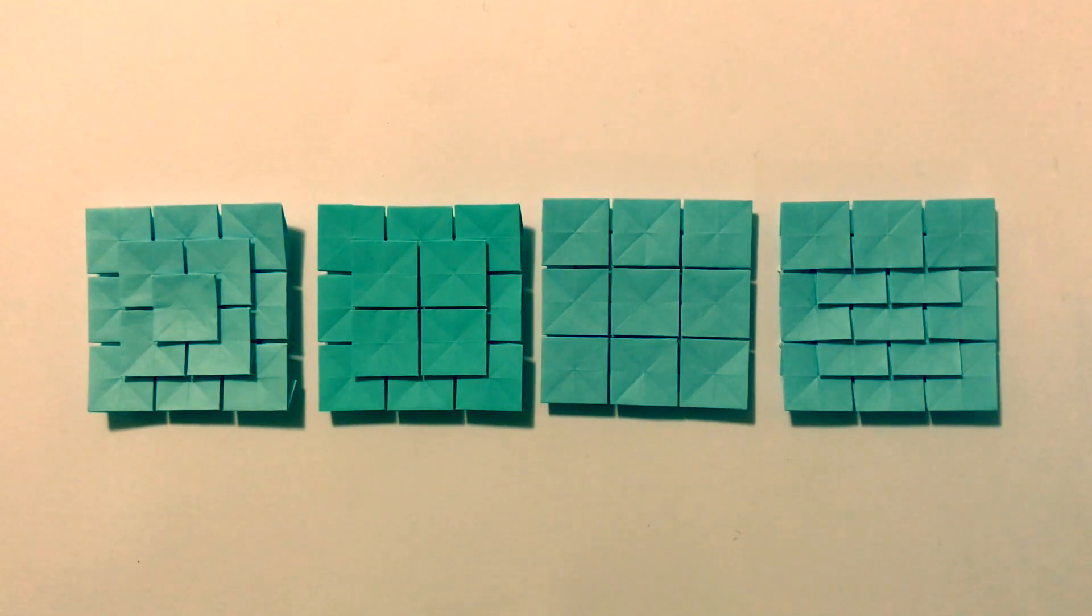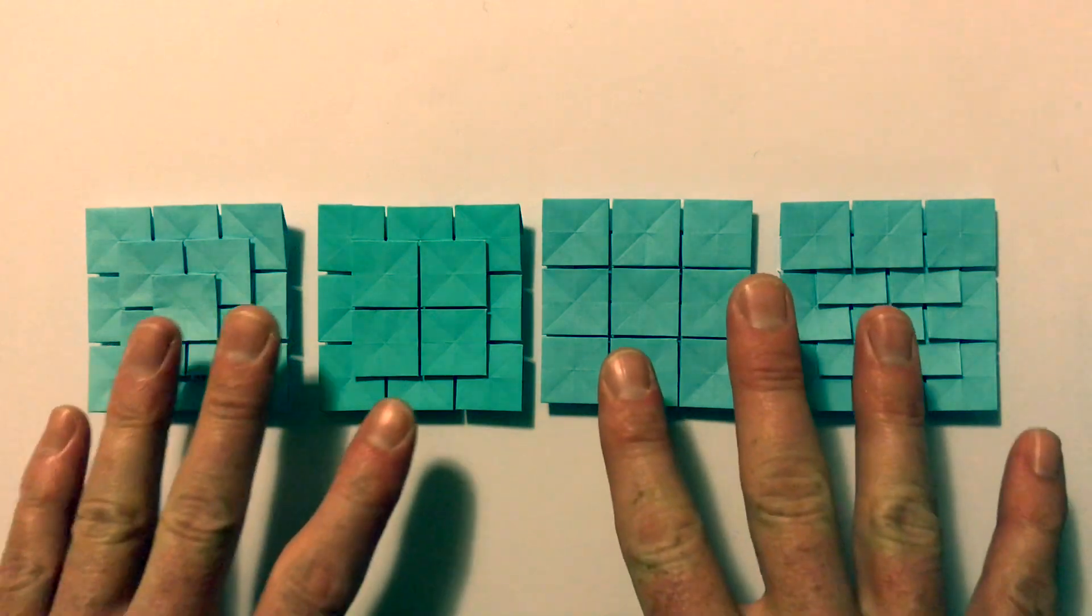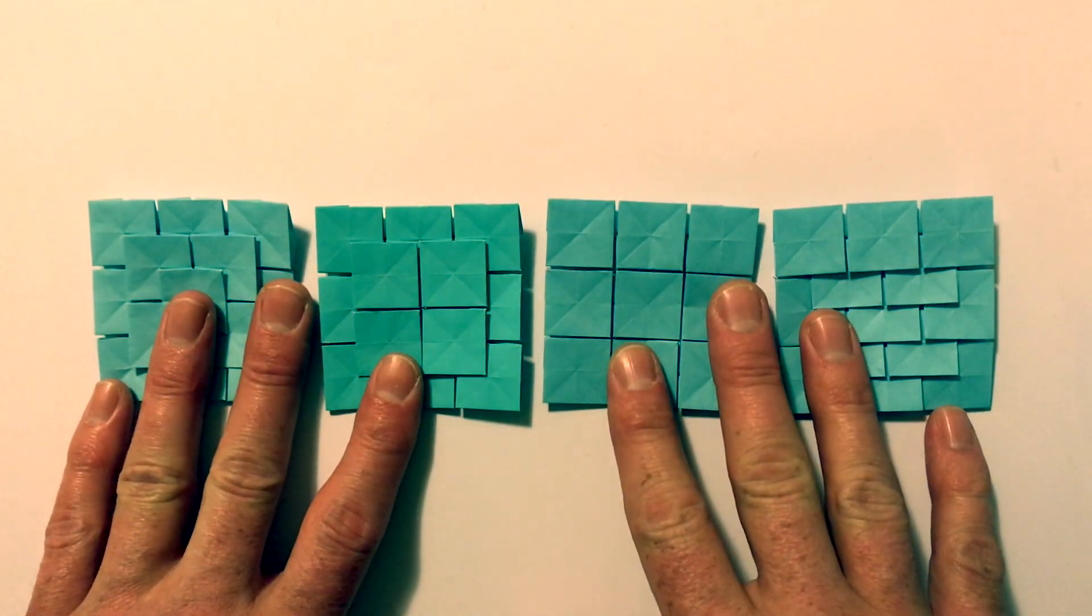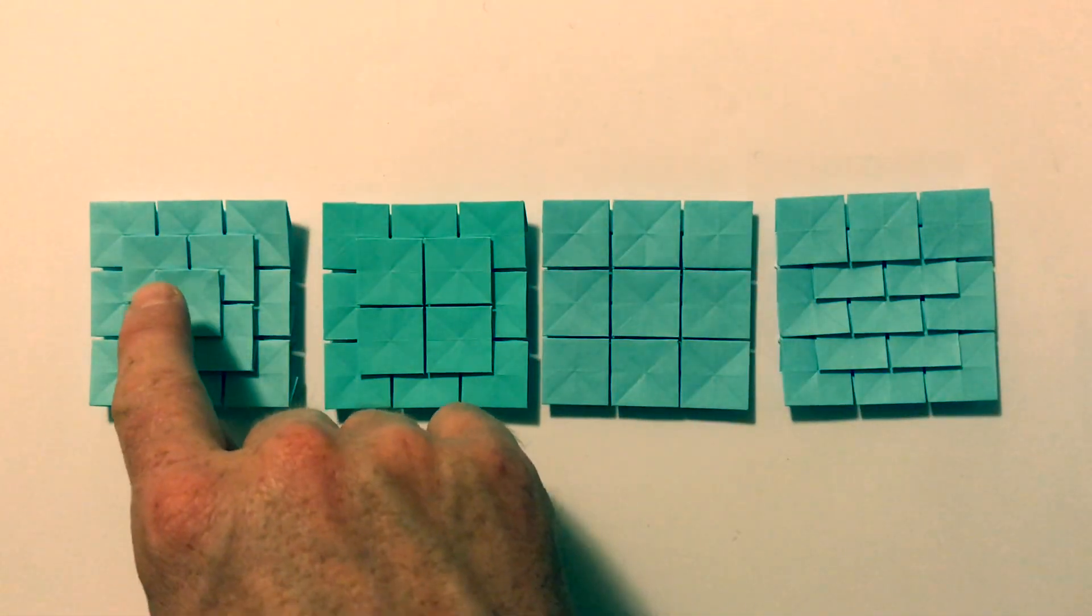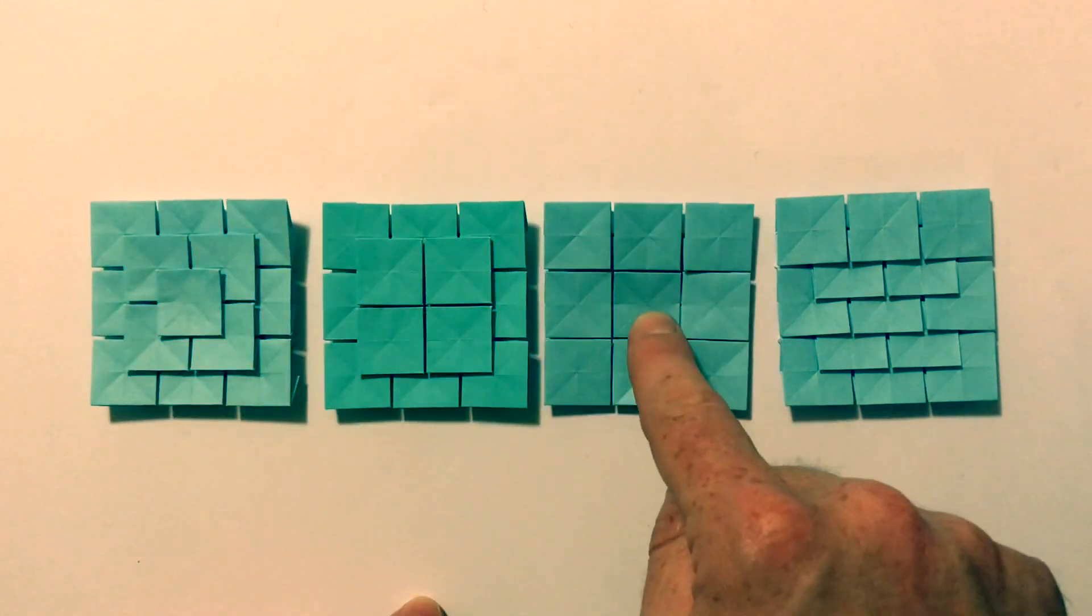So while this does get quite difficult when they get smaller, and if you're using larger grid sizing, changing them around after you've folded them does get a bit tricky but it is still possible. So what I wanted to show you is how to turn this one here into this one here.